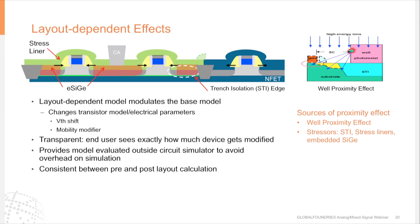We have a separate step that extracts geometry parameters, and from those parameters adjusts specific transistor model parameters — specifically threshold voltage and the mobility modifier. This is transparent to the user. Analog designers always want to understand how the model works to gain intuition during design. Because of the transparency of our implementation, you see a consistent model between pre- and post-layout. Additionally, because the model is evaluated outside the circuit simulator, it avoids the overhead of evaluating geometry parameters in an under-the-hood mode.